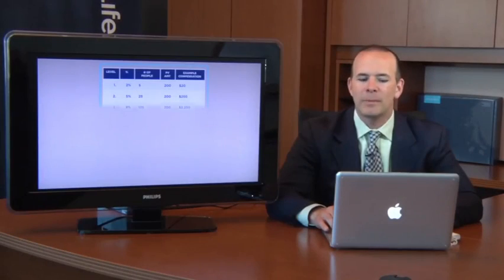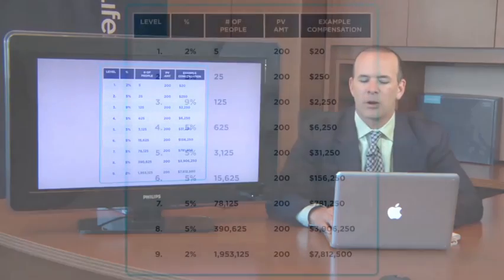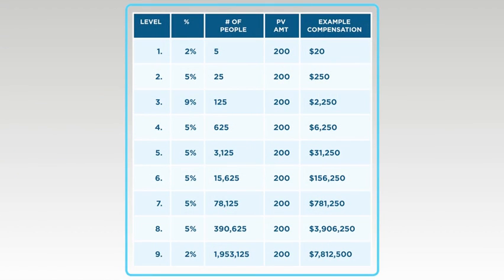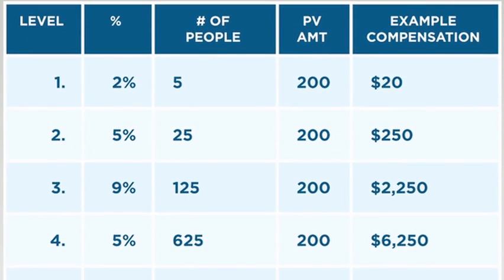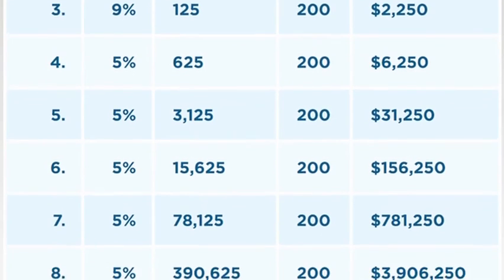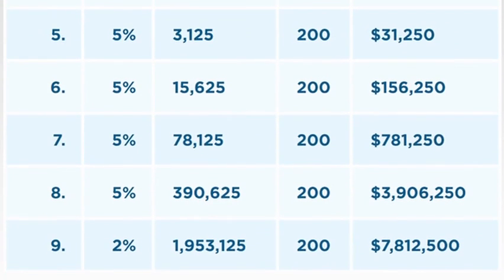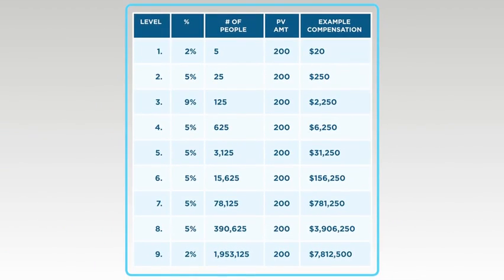Now this next graphic is an example of what you might earn through the Royalty Commission Bonus. On the left-hand side it shows levels, and we are going to assume that each one of the distributors or customers is consuming $200 each month. On the far right column, it shows what you might earn if this example were to occur. Again, this is just an example of what you might earn, this is not a guarantee of earnings. But in the far right column, you're going to earn $20 on your first level, $250 on your second level, $2,250 on your third level, $6,250 on your fourth level, $31,250 on your fifth level, so on and so forth. So you can see that this is a powerful, powerful way for you to generate residual income over the long haul or the long term of your business.